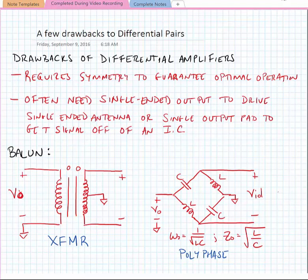Because of this need for a single-ended signal, oftentimes we have to use something called a balun, which is a balanced to unbalanced converter, or in other words, a differential to single-ended converter.